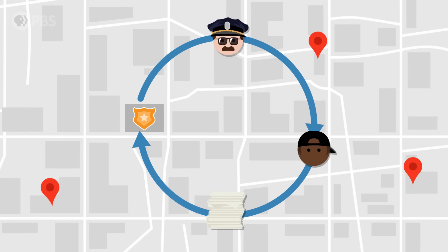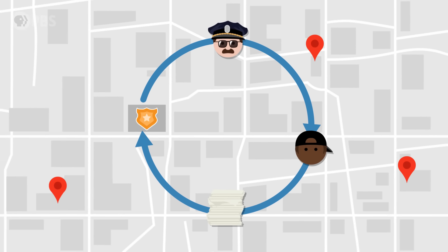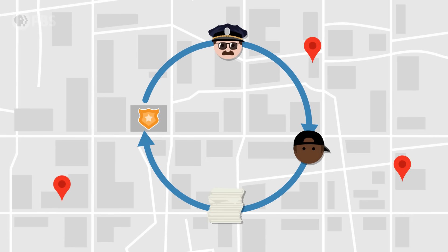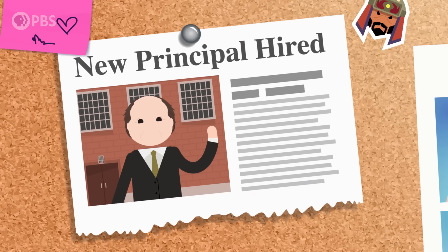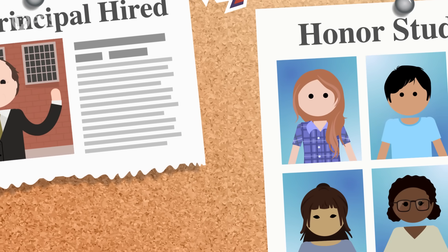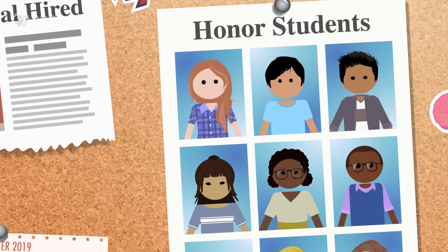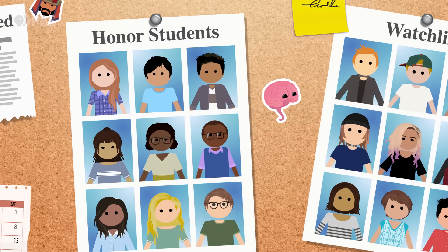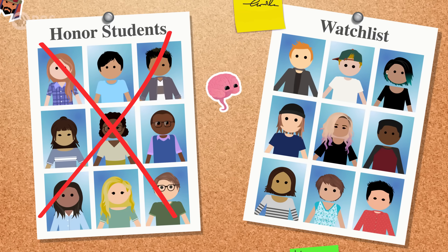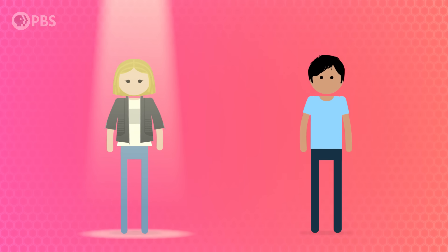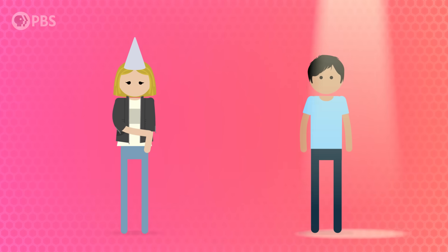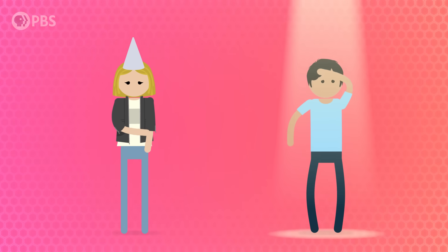Even though there might be crime in neighborhoods where police weren't being sent by this AI, because there weren't any arrests in those neighborhoods, data about them wasn't being fed back into the algorithm. While algorithms like PredPol are still in use, there is currently more effort to monitor and adjust how they process data. This would be like a new principal hired to improve the average grades of a school who creates a watchlist of students with really bad grades, checks up on them every week, and ignores students who keep up with good grades. If any student on his watchlist doesn't keep up with their homework, they get punished, but all the students not on his watchlist can slack off and get away with it. You can be the judge if you believe this is fair or not.